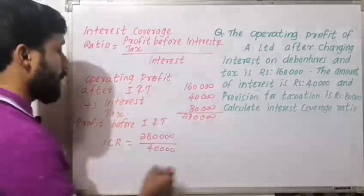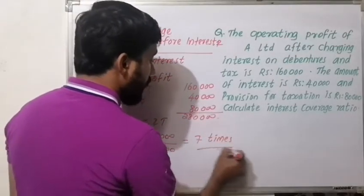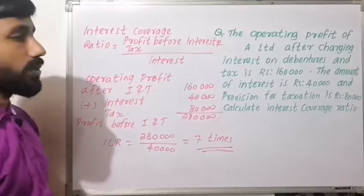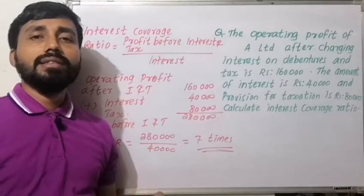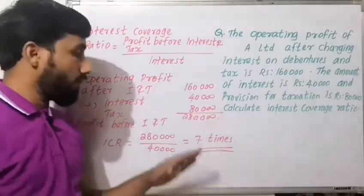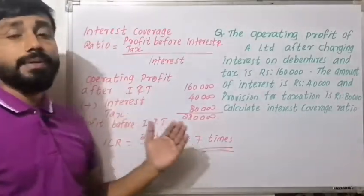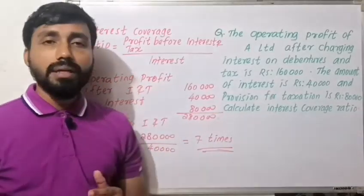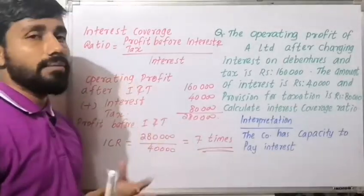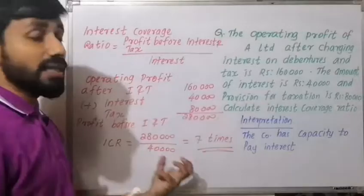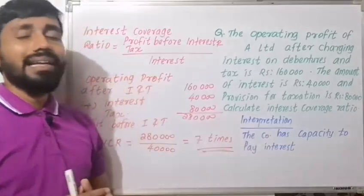Calculating: Profit Before Interest and Tax is Rs. 2,80,000 divided by Interest of Rs. 40,000 equals 7 times. The interest coverage ratio is 7 times. The standard ratio is 6 to 7 times, so the firm has the capacity to pay interest on its loans and debentures. Thus, the company has adequate debt servicing capacity.